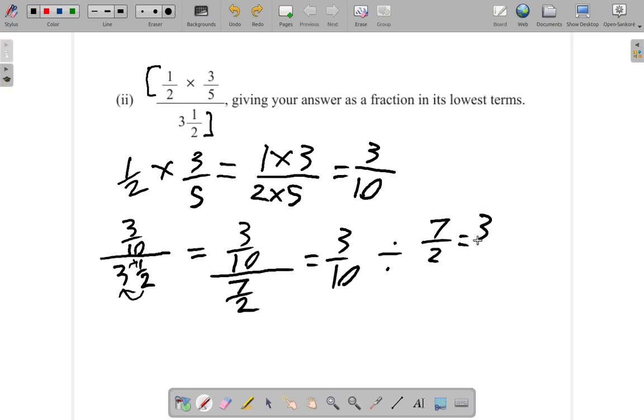So this becomes three-tenths multiplied by two over seven. You divide by a fraction, it's the same as multiplying by the reciprocal of the fraction. And the reciprocal of seven over two is two over seven. So here, up top, you have three times two.